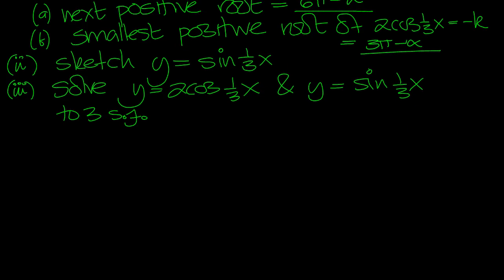Solve this equation then. When does 2 cosine x over 3 equal sine x over 3? That would be when tan, move this down and we get tan x over 3 equals 2.